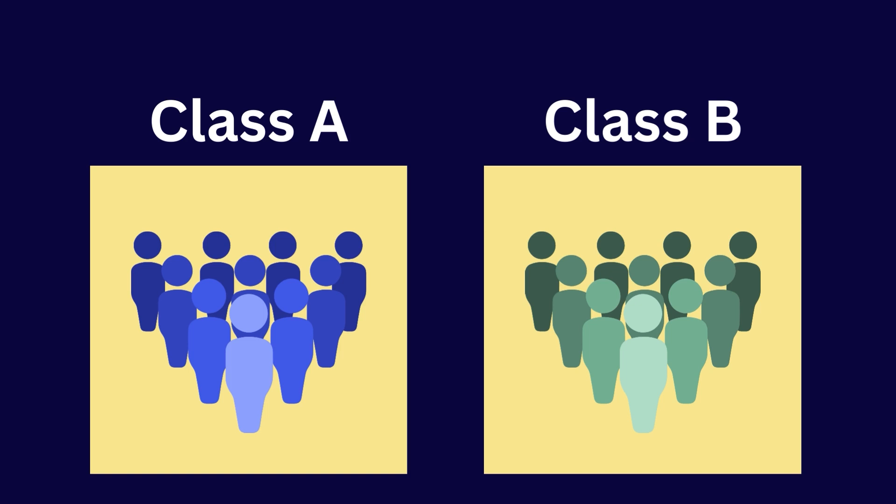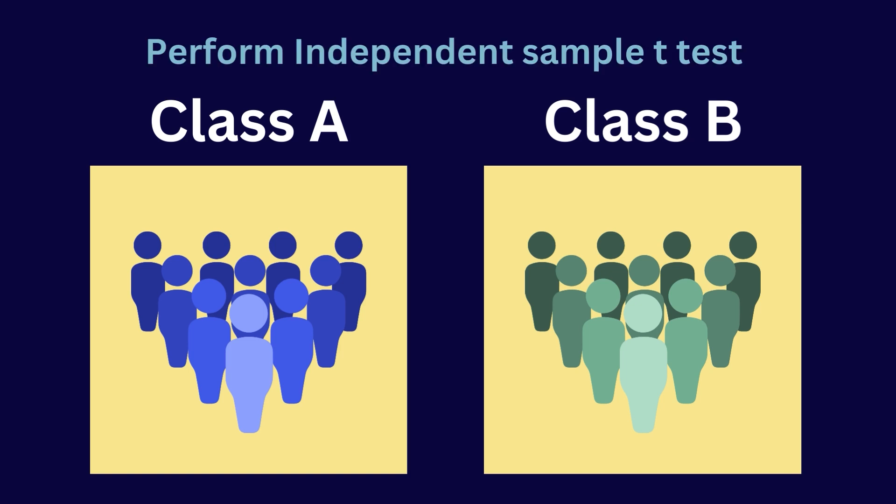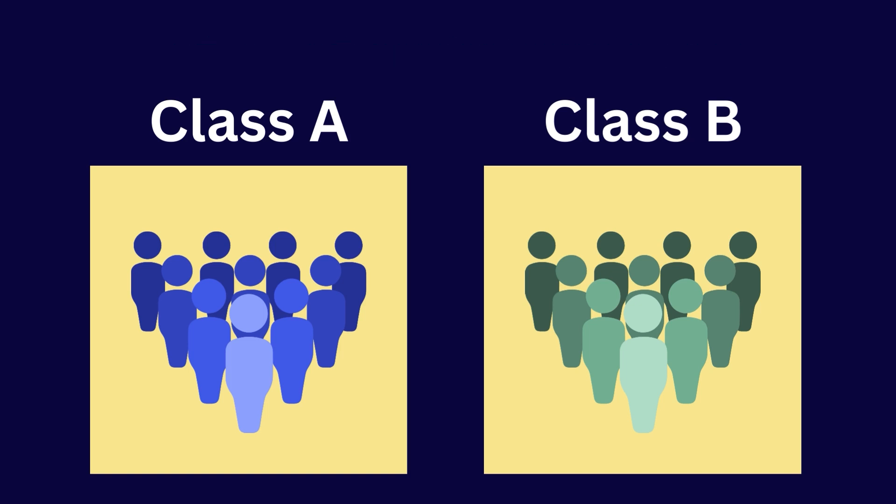You collect the scores from 10 students in each class and perform an independent sample t-test to compare the average scores. If the test shows a significant difference, you might conclude that one class performed better on the exam than the other. If there is no significant difference, you conclude that the performance of the two classes is similar.